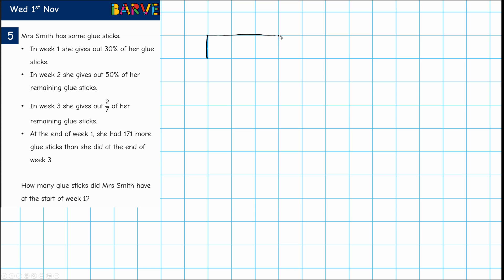Okay, so two, four, six, eight, ten, because that first bit says 30% so I'm going to split it into ten parts. In week one she gives out 30% of her glue sticks. So that's three of these parts. This is week one, that's the 30%.